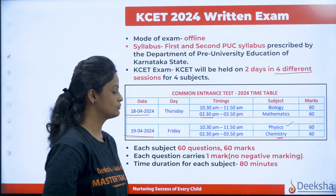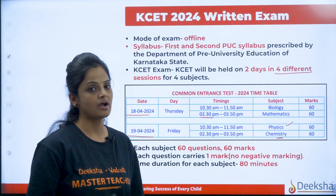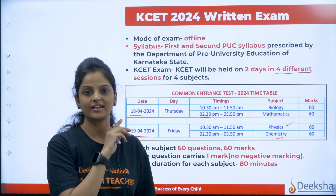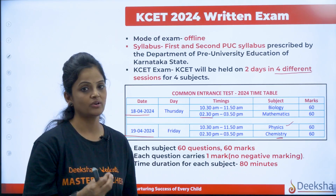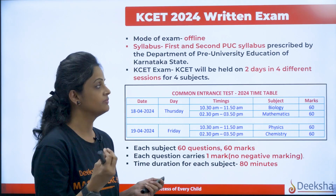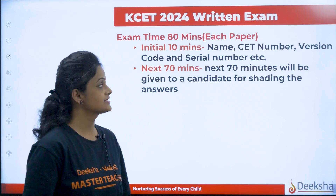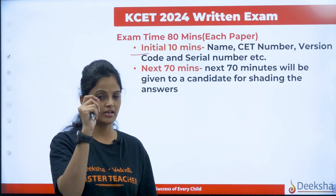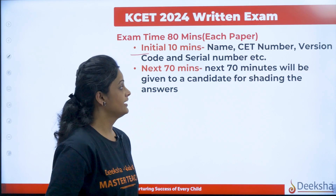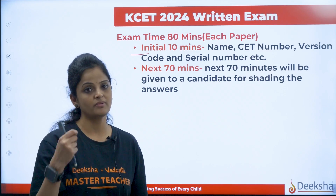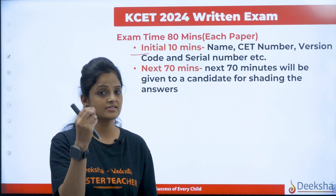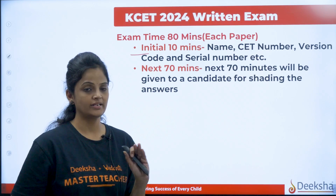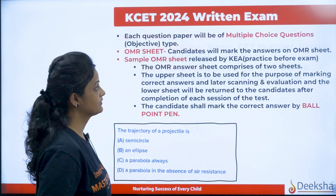Each subject has 60 questions and 60 marks. There is no negative marking — one mark each question and there is no negative mark. Per subject you will have 80 minutes. The initial 10 minutes will go on writing the names and details. I will show you the OMR so you will understand how detailed it will be. The rest of the 70 minutes will go on your marking — according to the questions, you have to see the answers and mark it. Don't rush at the end; before five minutes, wind up everything and be ready to give the papers away.